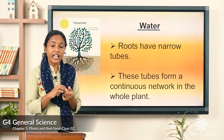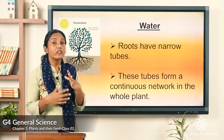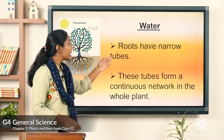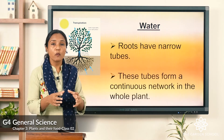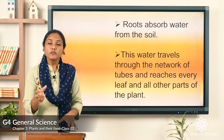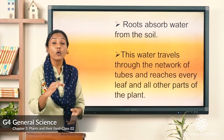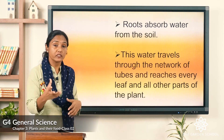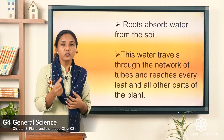Now we will see how water plays a part in making food. Roots have narrow tubes — you can see them in the picture. These tubes form a continuous network throughout the whole body of the plant. Roots absorb water from the soil, and this water travels through the network of tubes to reach the leaves and other parts of the plant.